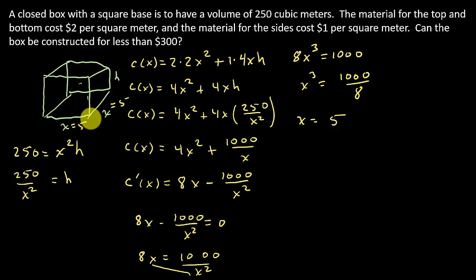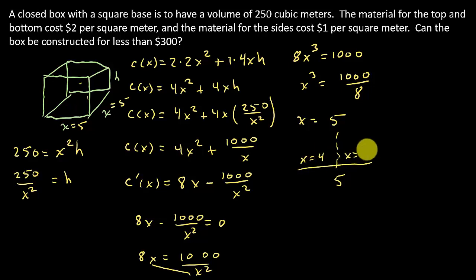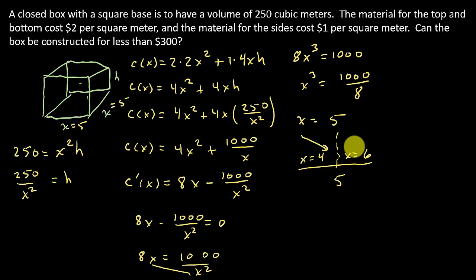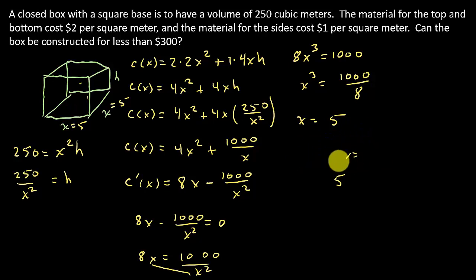I need to make sure this is a minimum. Plotting X = 5 and choosing test points X = 4 and X = 6: plugging 4 into C'(x) gives 32 − 1000/16, which is negative, so the function is decreasing there. Plugging 6 in gives a positive value, so it's increasing. That tells me X = 5 is a minimum.